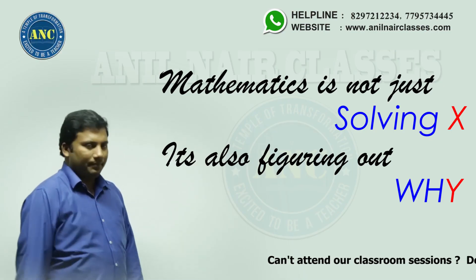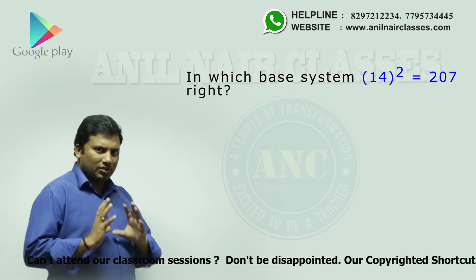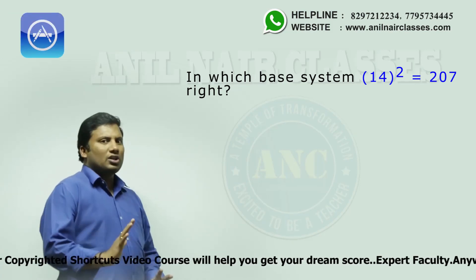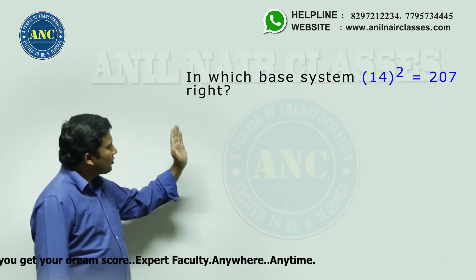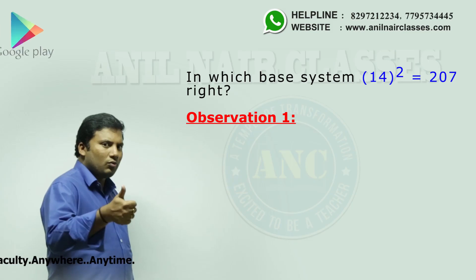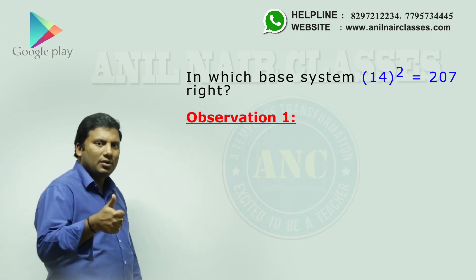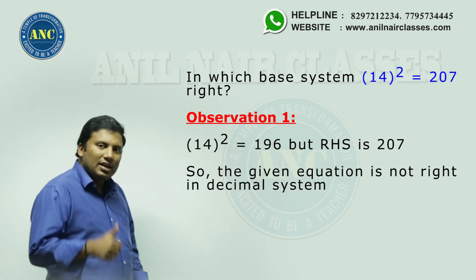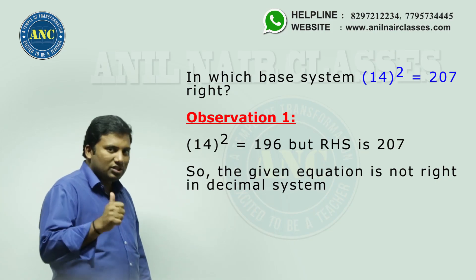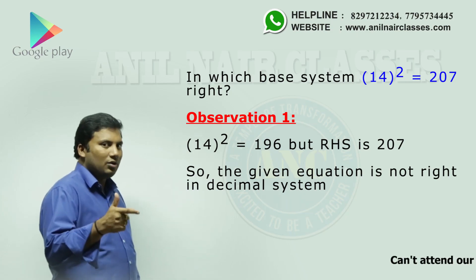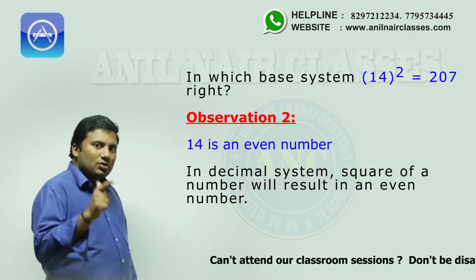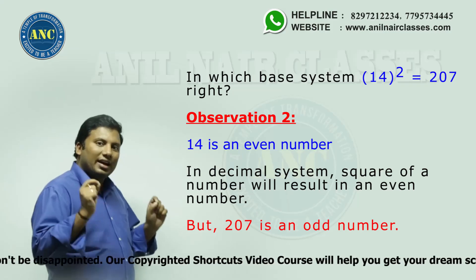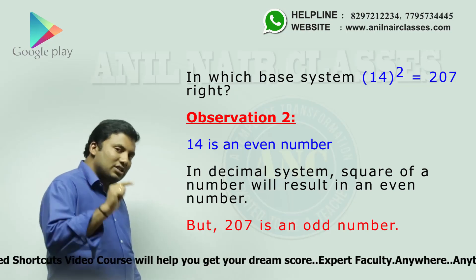Through an example: in which base system is (14)² equivalent to 207? Listen carefully. This question is incorrect in decimal system because in decimal system (14)² equals 196, but the right hand side value given is 207. Also, 14 is an even number — squaring an even number should give an even number, but 207 is odd. That means this question is definitely incorrect in decimal system. We have to find out in which base system it holds.